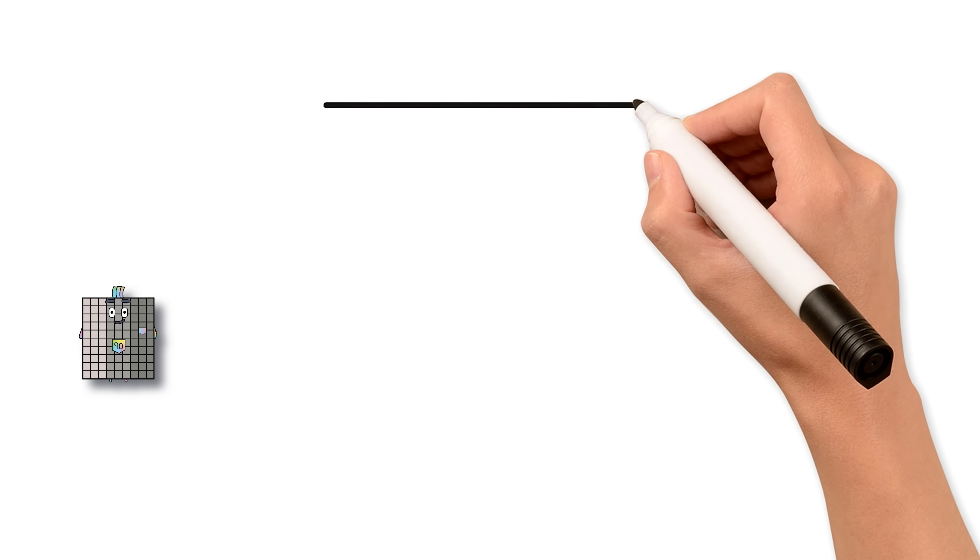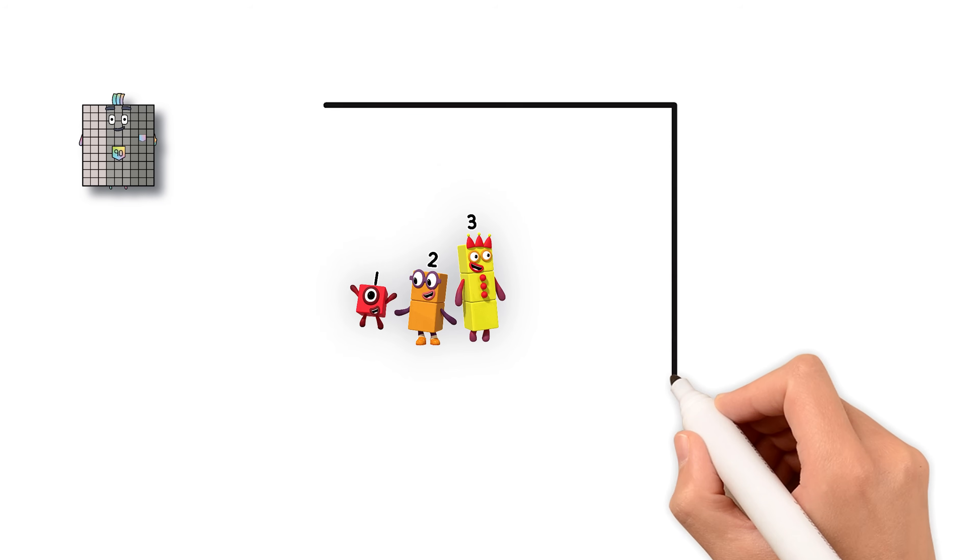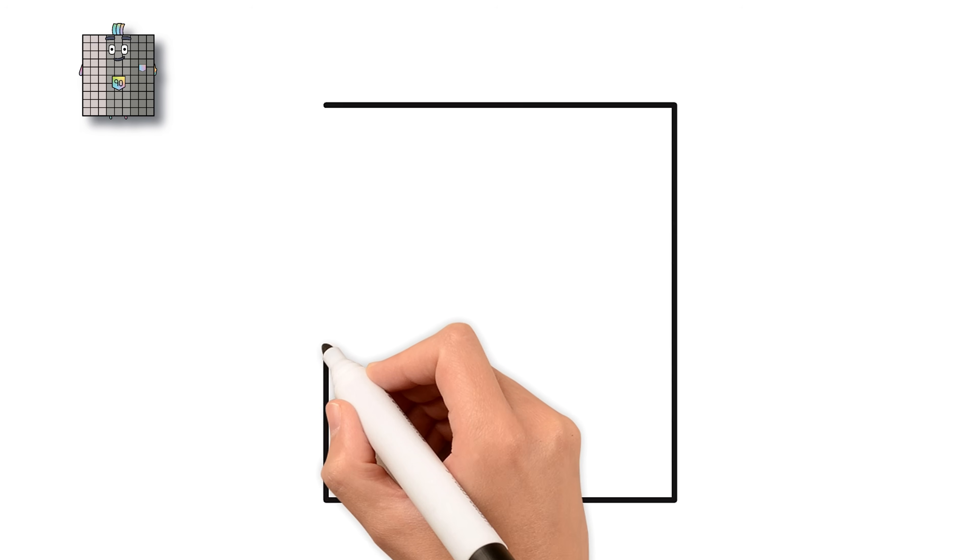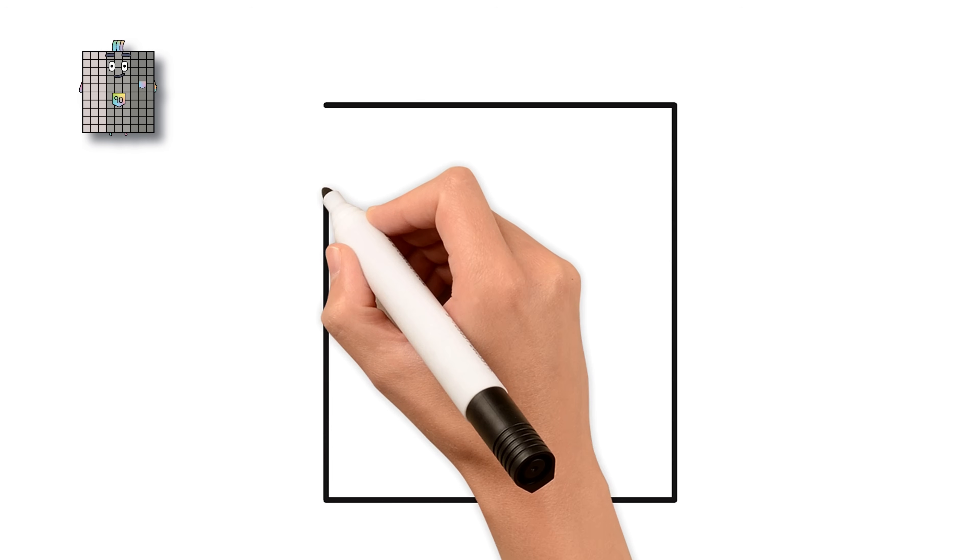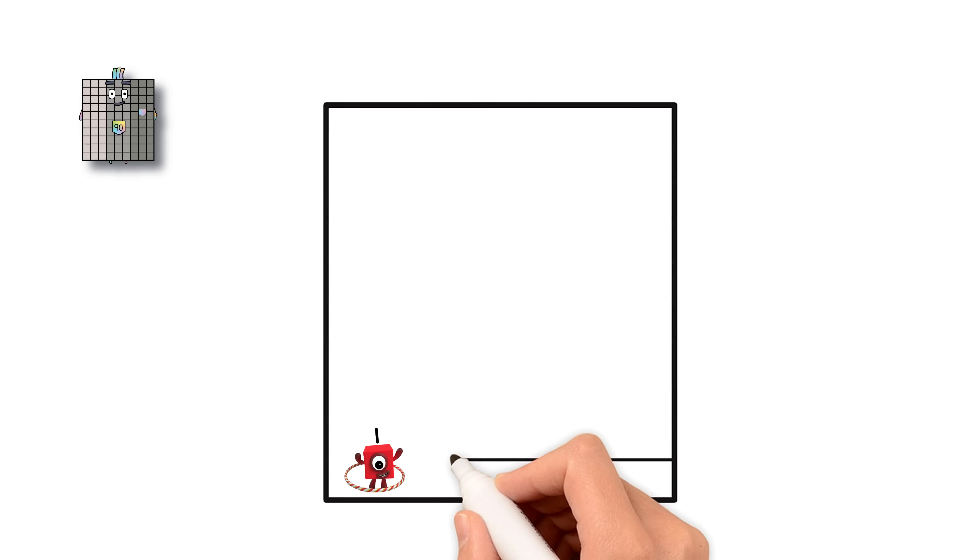First, draw a big tall rectangle. N-I-N-E-T-Y 90. He's big, grey, super stylish, and made of lots and lots of tens. This is number block 90's body. It should be much taller than it is wide.